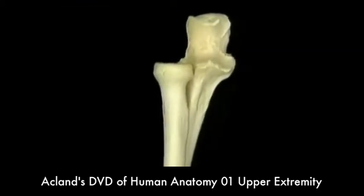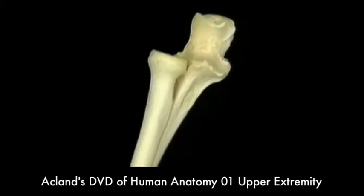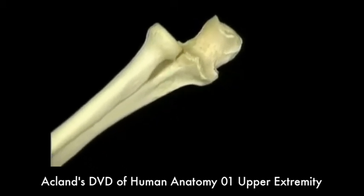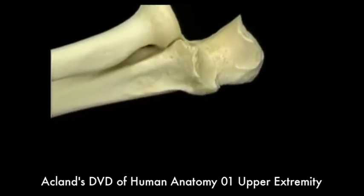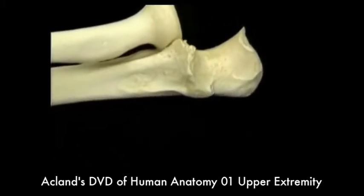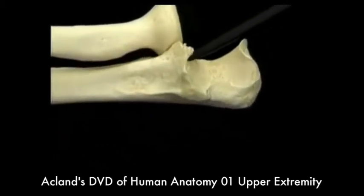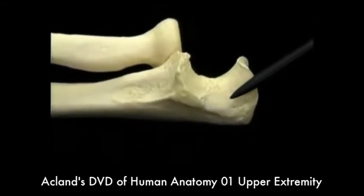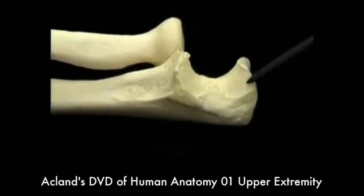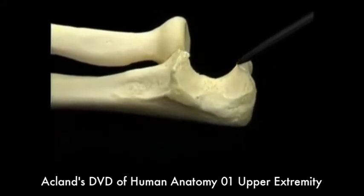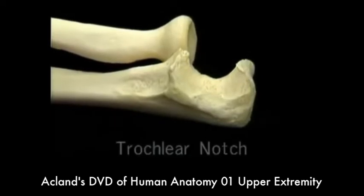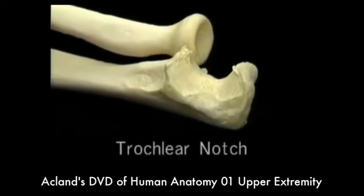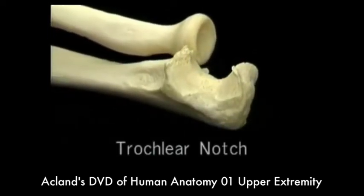We'll look at the ulna first. The main feature of the proximal end of the ulna is this large curved articular surface. The curve that it forms is called the trochlear notch. It articulates with the trochlear of the humerus.